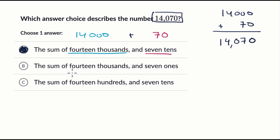The second choice here still has the fourteen thousands, so it still has this part right over here, but they say seven ones. So if you were to add 14,000 and then have seven ones, you'd get 14,000, and then you would add those seven ones in the ones place, so you would get that.